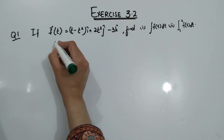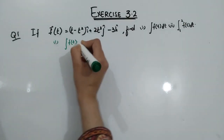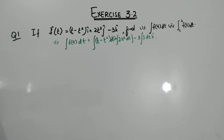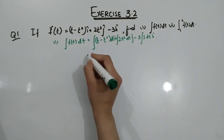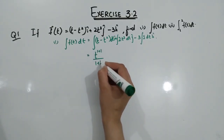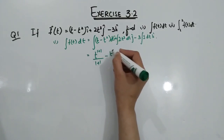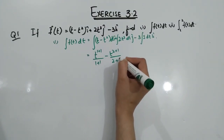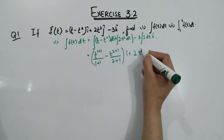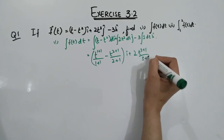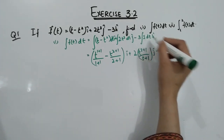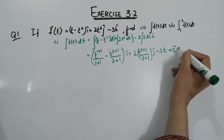Let's do the first part first. The first part is integration of f(t) dt, so we apply integration separately to each term. The simple power rule of integration is: add 1 to the power, and divide by that same power. Since the power is minus 2, we do 2 plus 1, and divide by that power to get the i component. Similarly for t cubed: t power 3 plus 1 over 3 plus 1 gives the j component. For minus 3 and 1, the integration of 1 gives t, plus c as the constant of integration.